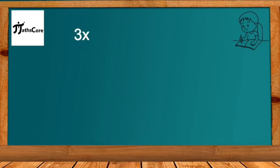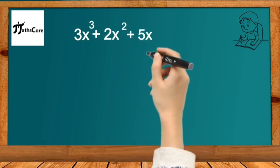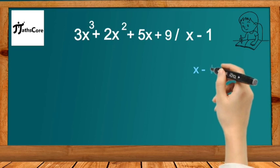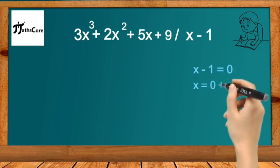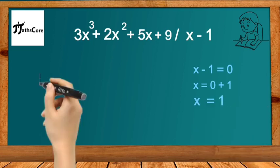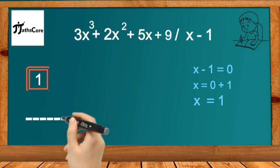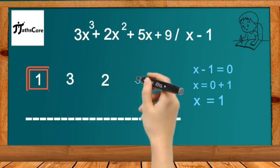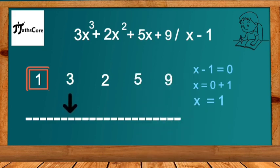The second example is 3x³ + 2x² + 5x + 9 divided by x - 1. Equate x - 1 with 0: x - 1 = 0, so x = 1. Take this value of x, which is 1, as the divisor, and let's arrange all the coefficients of the given polynomial: 3, 2, 5, 9.